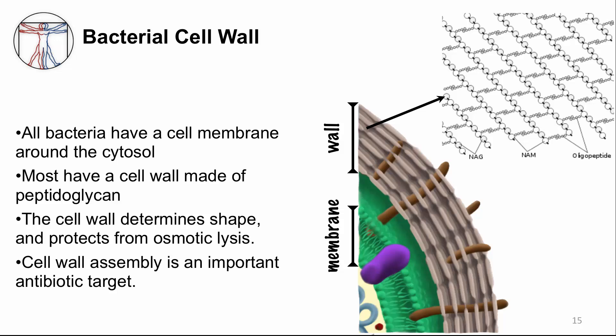The peptidoglycan cell wall is a flexible but strong molecular mesh made of a single molecule. It consists of parallel strands of repeating disaccharides — that means two sugars — cross-linked to each other by short peptide chains. The wall is important for maintaining the shape of the bacteria and protecting it from osmotic pressure. It needs to be constantly modified and assembled to accommodate growth and division, making it a very important target for antibiotics called cell wall agents.